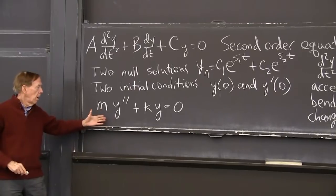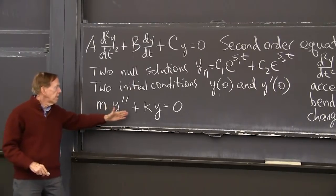No y prime term. m y double prime plus ky equals 0.